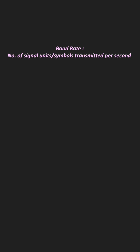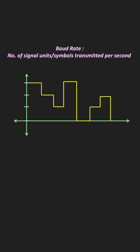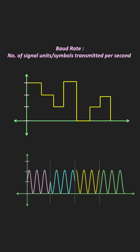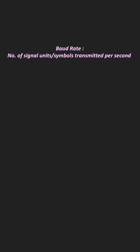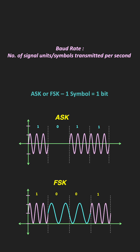Similarly, the baud rate defines the number of symbols, or signal changes, per second that is transmitted between two devices. Here, the symbol represents different voltage levels or different phase shifts in the signal. So depending on the modulation technique, each symbol can carry one bit or more than one bit of information. For example, in amplitude and frequency shift keying, since the signal has only two different states, each symbol carries one bit of information.